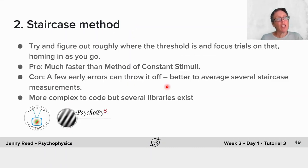The staircase method, as you can see, is much faster than the method of constant stimuli. In my experience, you can get a reasonably accurate threshold in, say, 30 trials with the staircase, whereas you might need 300 with method of constant stimuli.